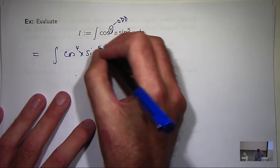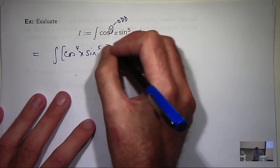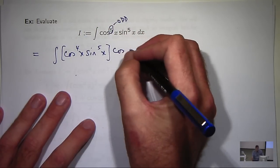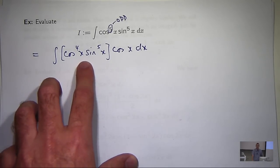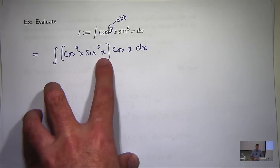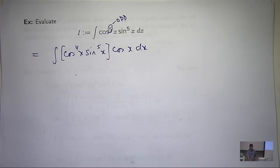So now what my challenge is, is to get everything in these square brackets to powers of sine. So how do I do that? Well, it's just a matter of going to work on the cos to the power 4.